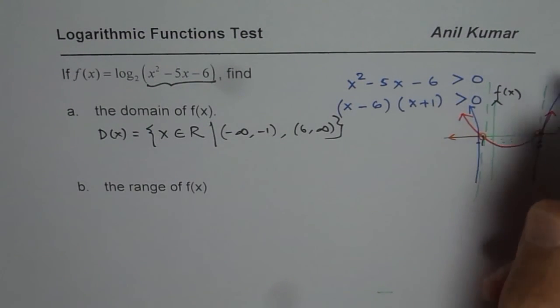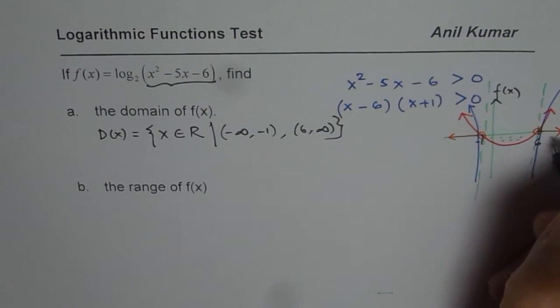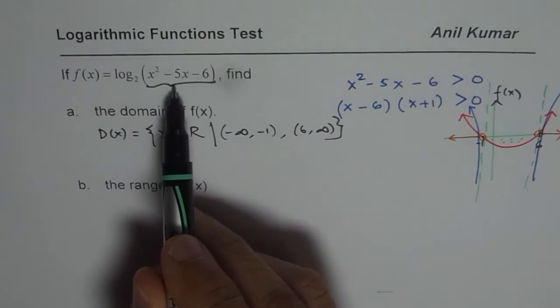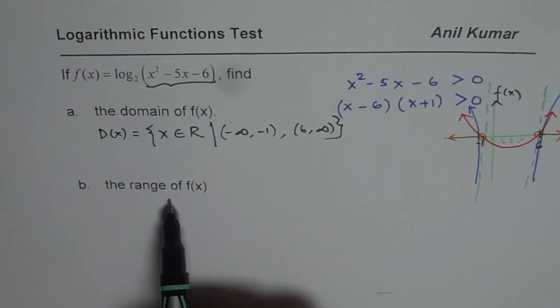Do you understand? If it is 1, then it is 0. If we have less than 1, then you get negative values.